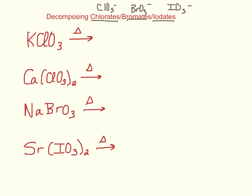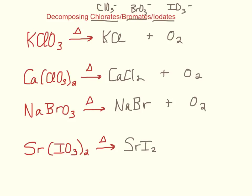So KClO3 makes KCl and oxygen. Calcium chlorate makes calcium chloride and oxygen. Similarly, sodium bromate makes sodium bromide and oxygen. Strontium iodate makes strontium iodide and oxygen gas.